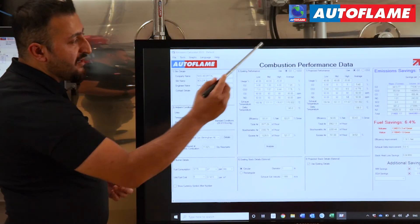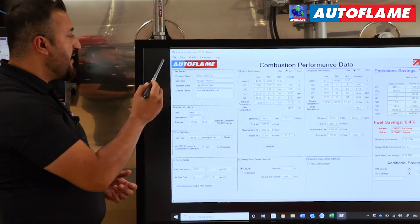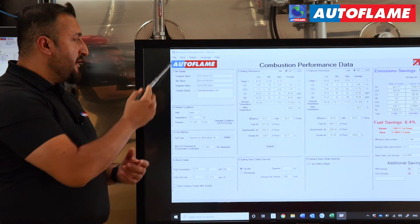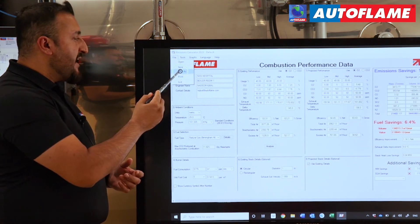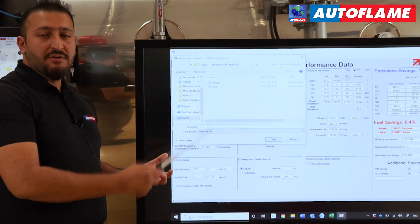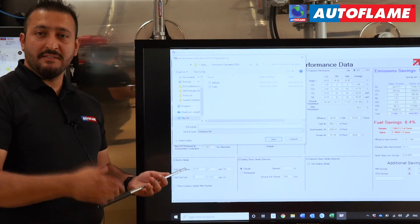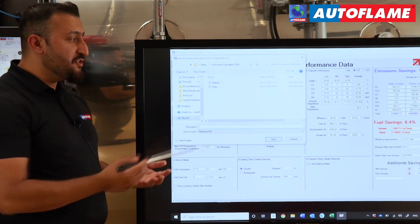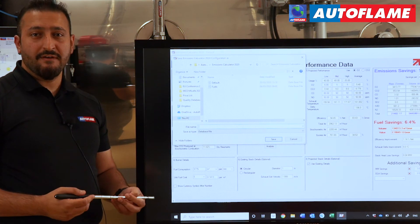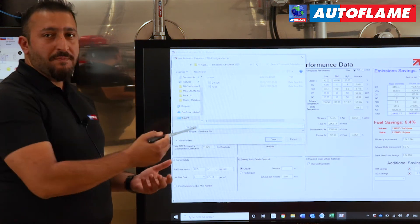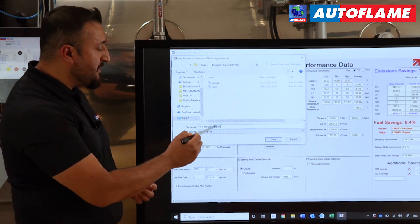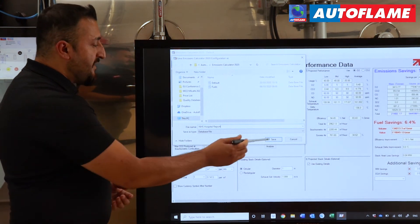Once we have calculated our savings, we can now save that into our PC. We can click on File, then go to Save As. The reason why we're doing Save As is because it will save all this data into an emissions calculator file, which means if later on the client asks you to change something - they may ask you to add draft control into the report - we will be able to open up the file and add that. So we're saving this file as NHS Hospital Report.